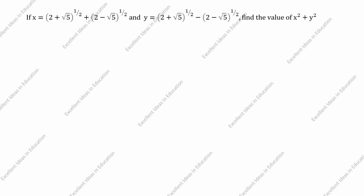Hi students, welcome to my channel 'Excellent Ideas in Education'. Today we are going to solve this number system problem. If x is equal to (2+√5)^(1/2) + (2-√5)^(1/2) and y is equal to (2+√5)^(1/2) - (2-√5)^(1/2), find the value of x² + y².